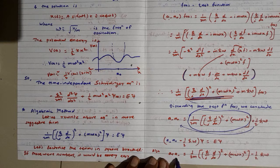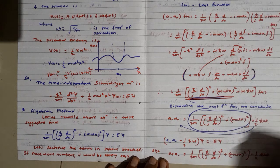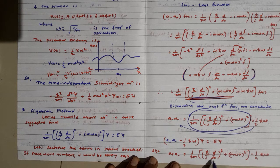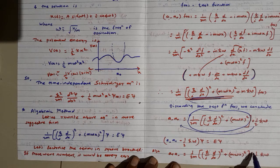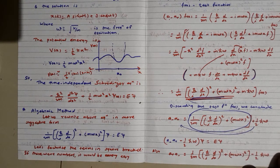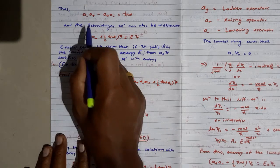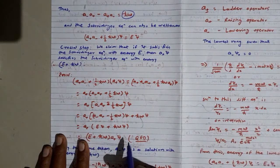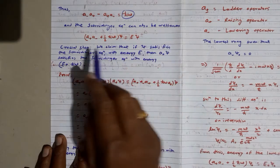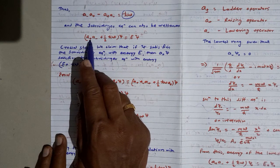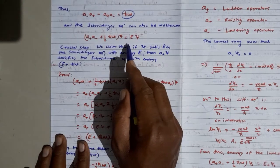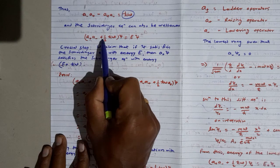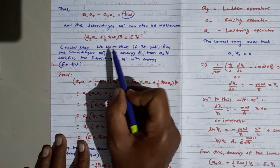Similarly, a₊a₋ gives the same expression but with minus ½ℏω instead of plus ½ℏω. Subtracting the two products: a₋a₊ - a₊a₋ = ℏω. The Schrödinger equation can also be written as (a₊a₋ + ½ℏω)ψ = Eψ. Note the sign difference carefully, as this is a common source of confusion.